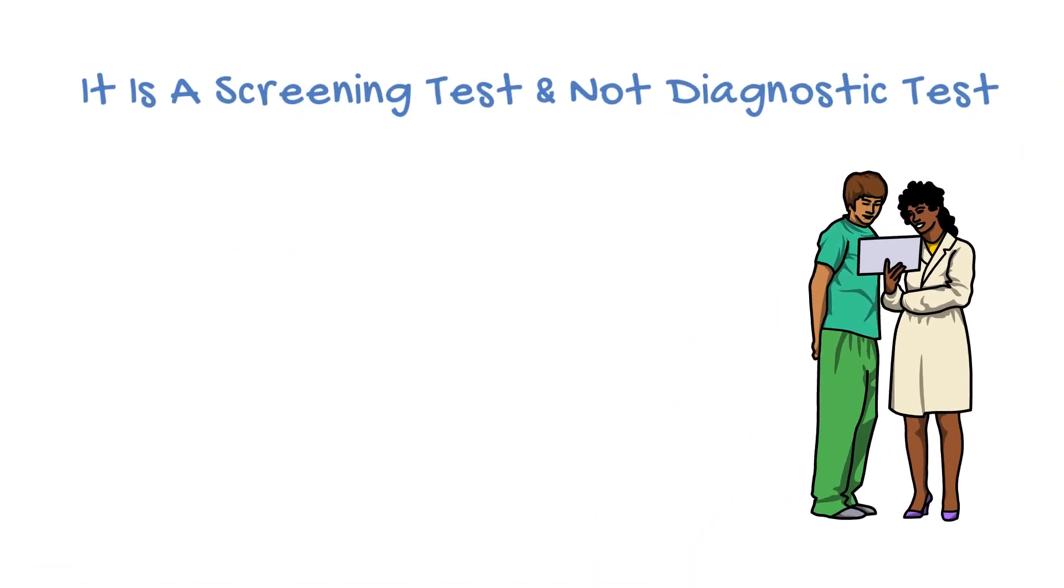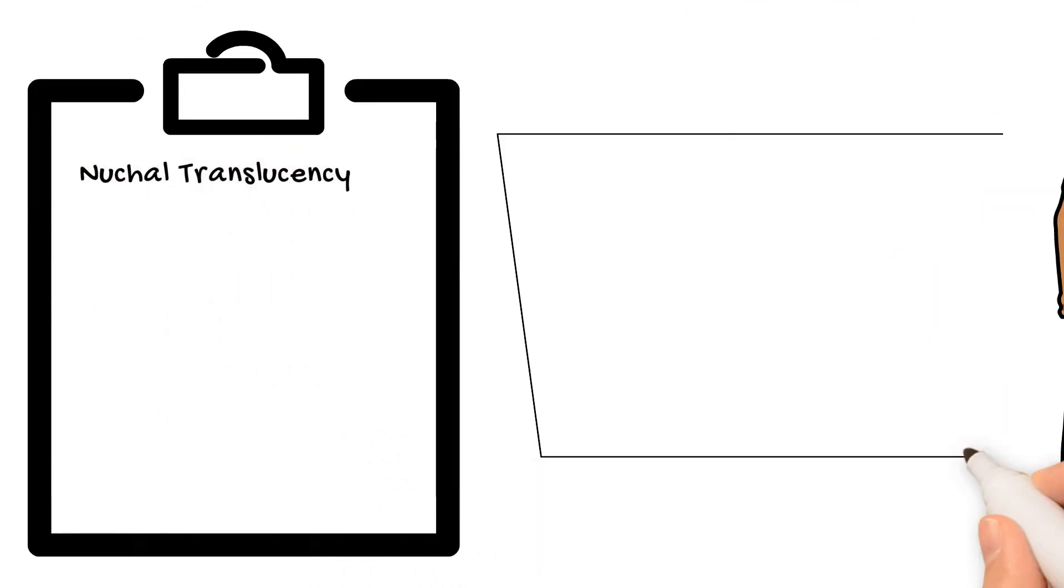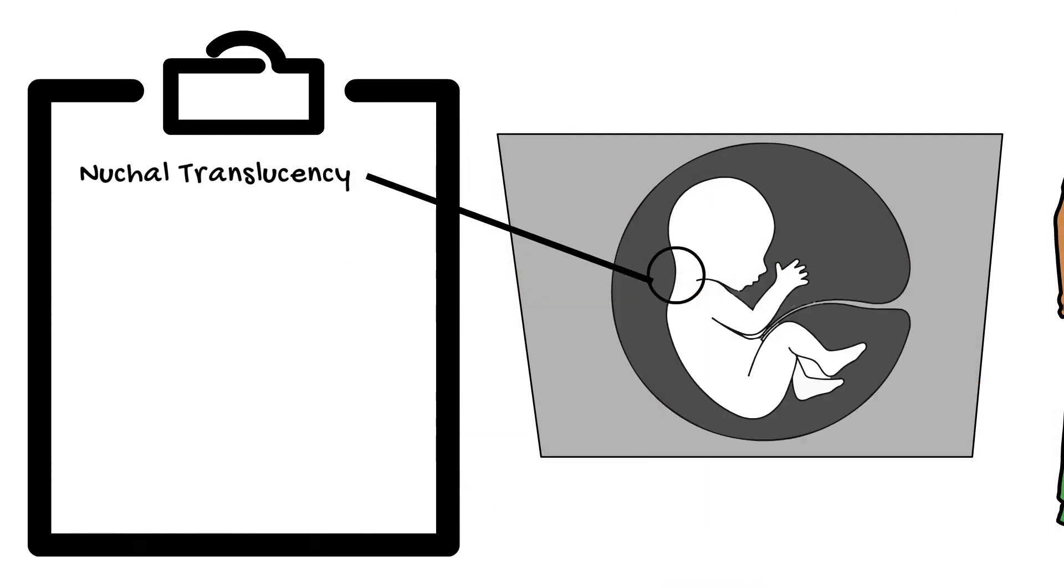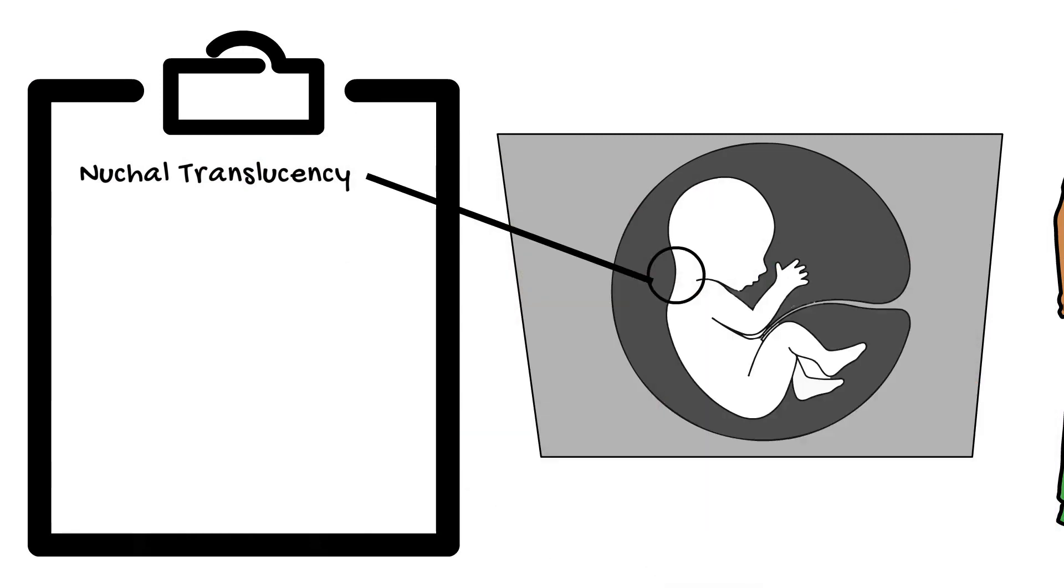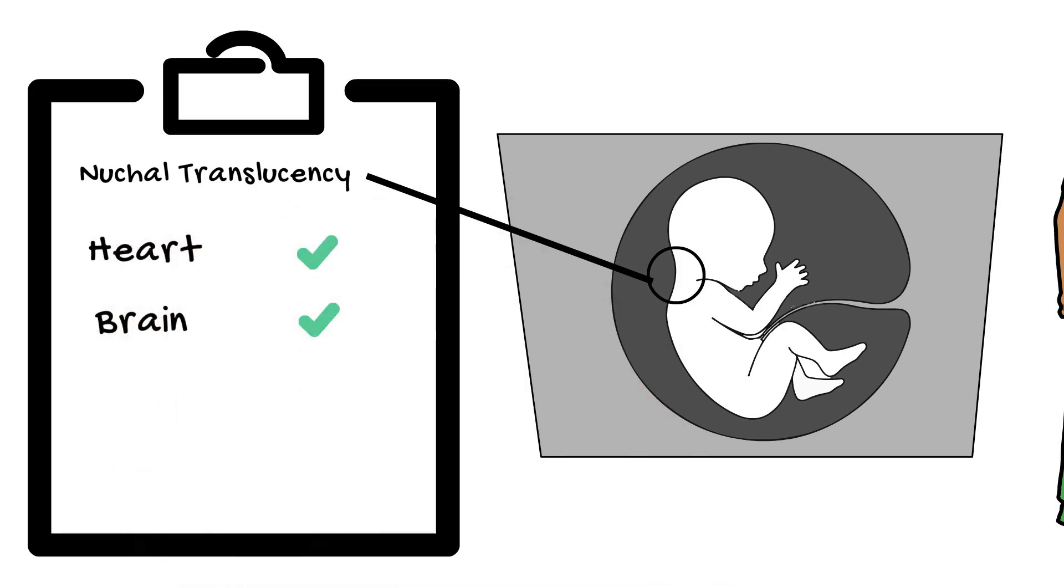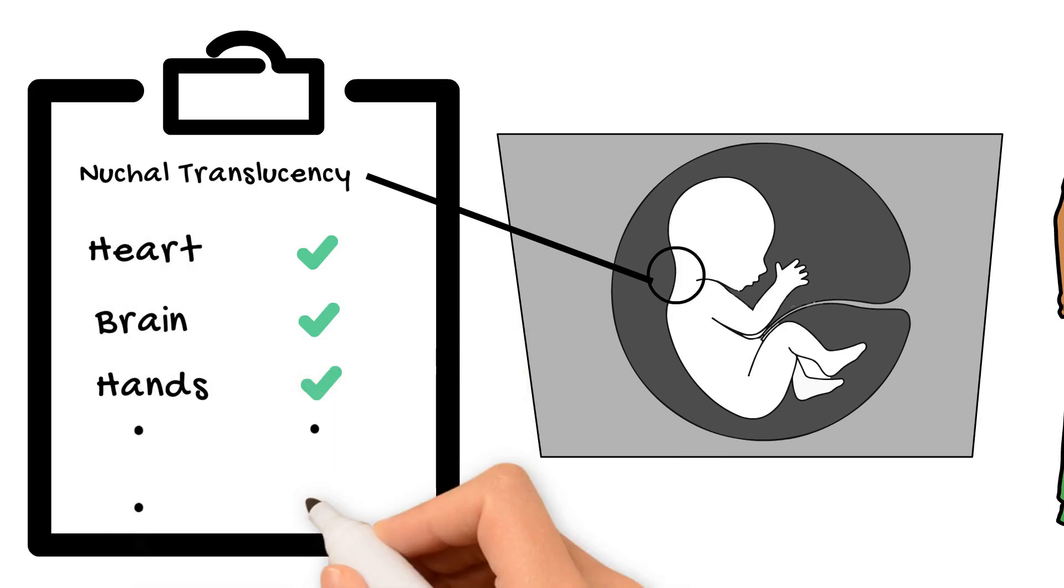The scan offered at this stage is commonly referred to as the nuchal translucency, which is a measurement of the fluid found under the baby's neck, and can indicate an increased chance of certain anomalies. Nuchal translucency is just one of our long checklist of structures that we examine during our early baby scan.